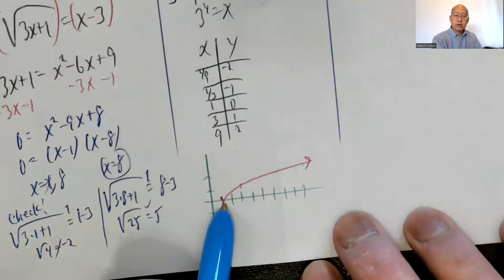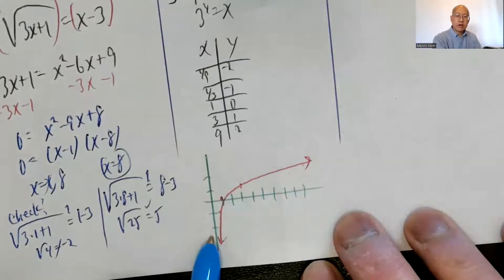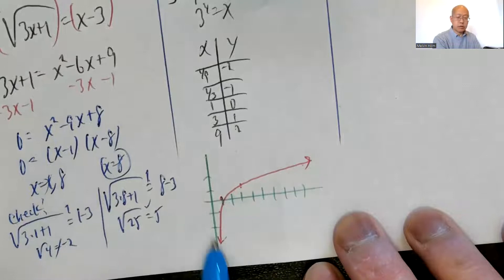So the points are: (1,0), (3,1), (9,2), (1 third, negative 1), (1 ninth, negative 2). So it looks something like that.